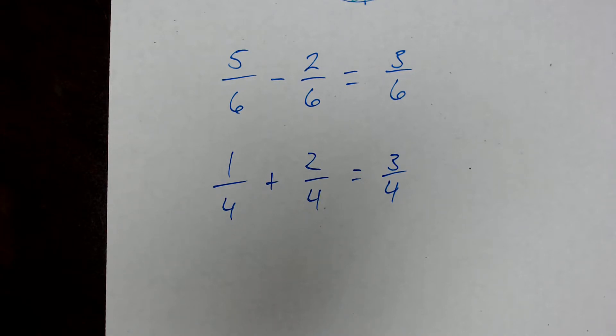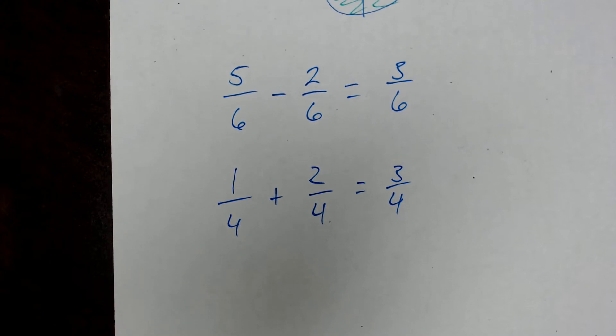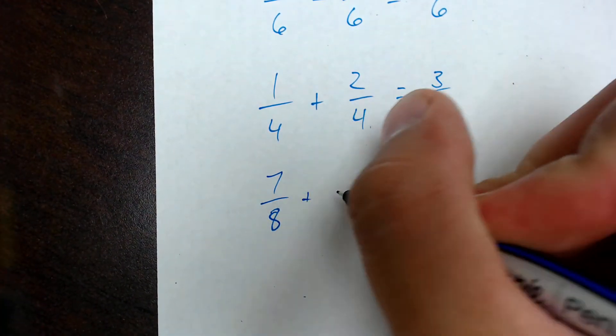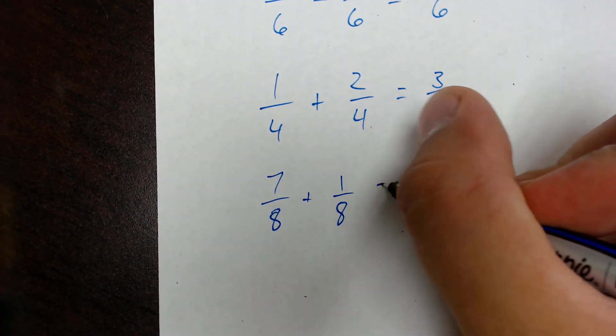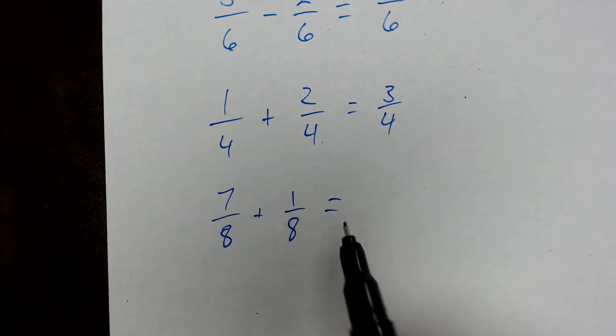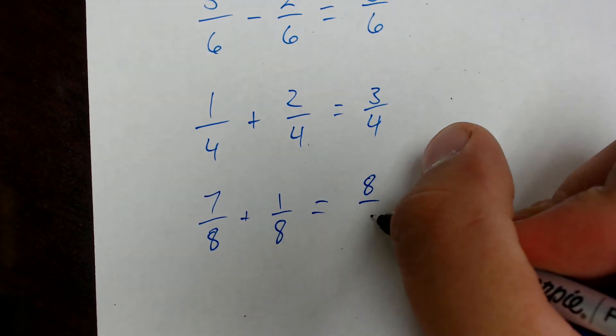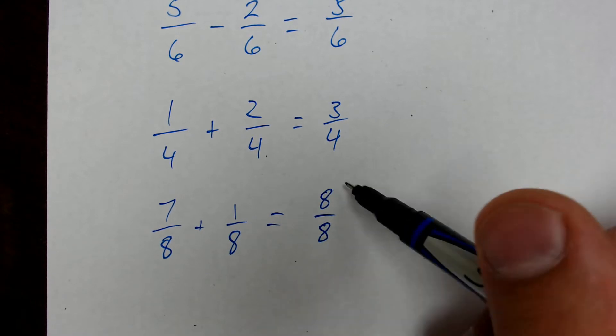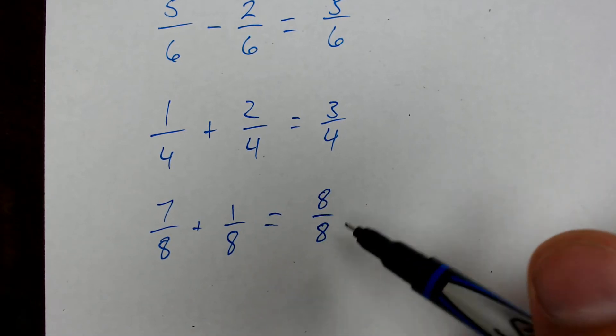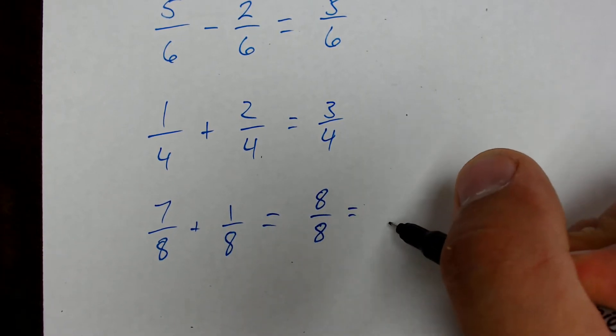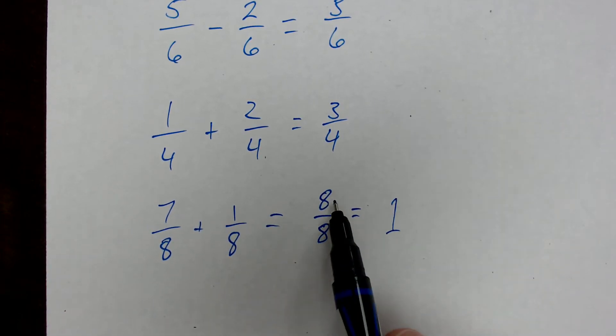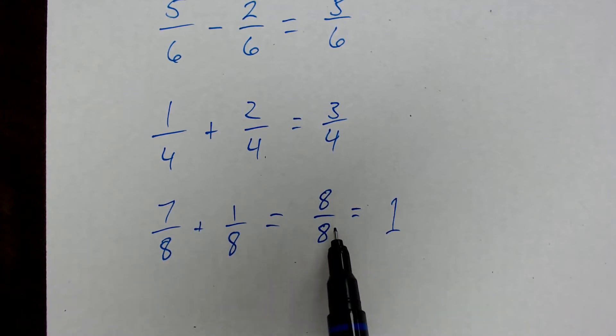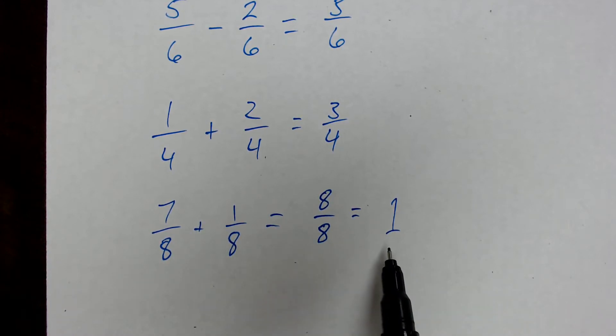So let's say we've got seven-eighths plus one-eighth. Okay. So when we add this, seven plus one gives us eight. The denominator does not change, so now we have eight over eight. Whenever you have a fraction that has the same number on top as the bottom or a completed fraction, eight-eighths is equal to the number one. So if you ever have a fraction where the top and bottom numbers match, that's the same as writing down the number one. So if you get an answer like eight-eighths, your final answer will be the number one.